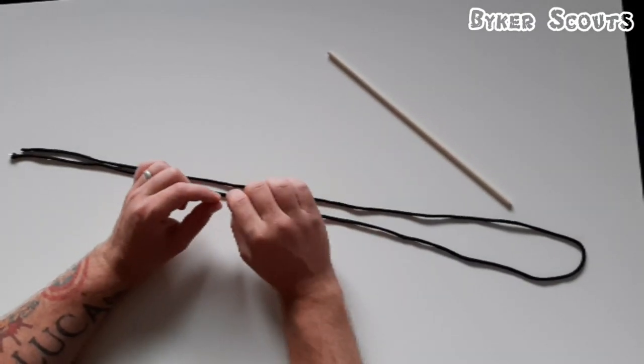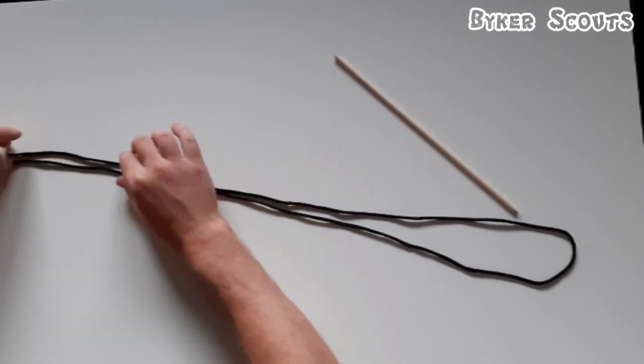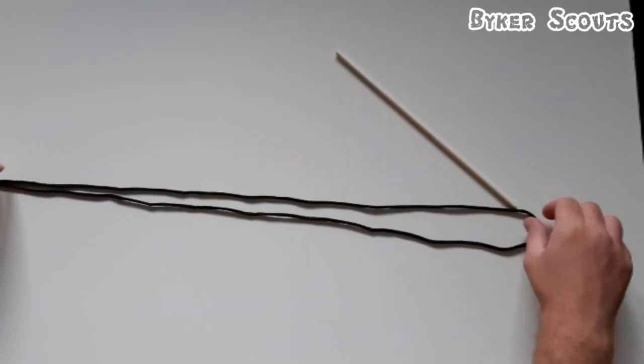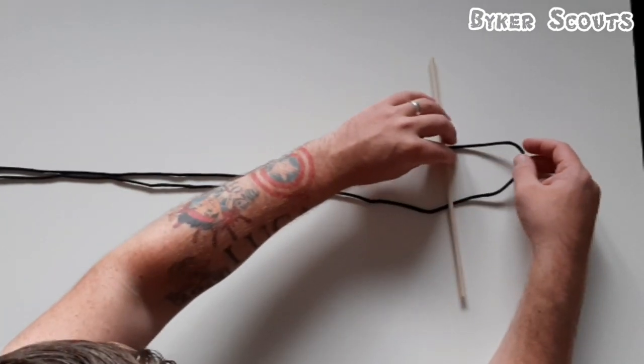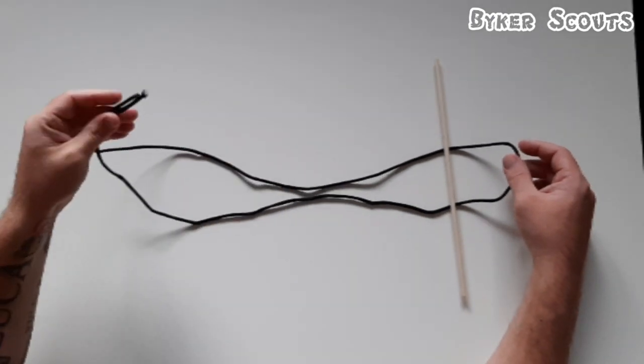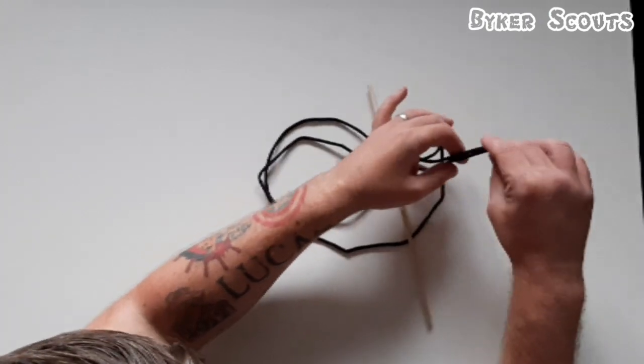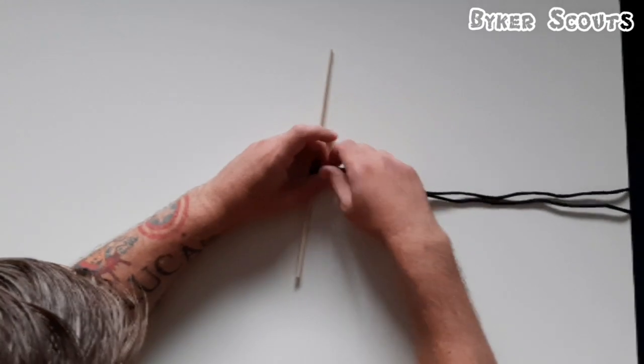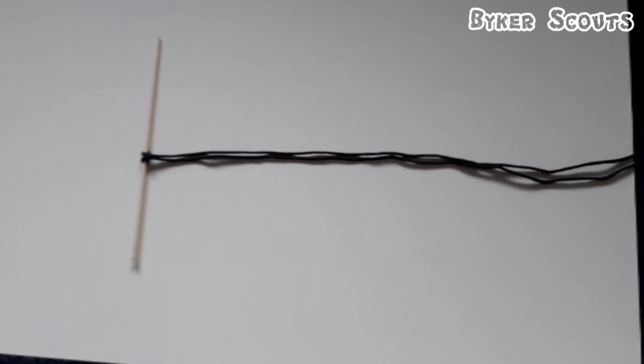For this one we'll be doing the lanyard hitch. You need to fold your string or paracord in half, make sure it's even. You've got a little bend in it there - just place it down on top of your dowel. Bring the two ends of your string and paracord up through the hoop and pull tight, and there you have your lanyard hitch.